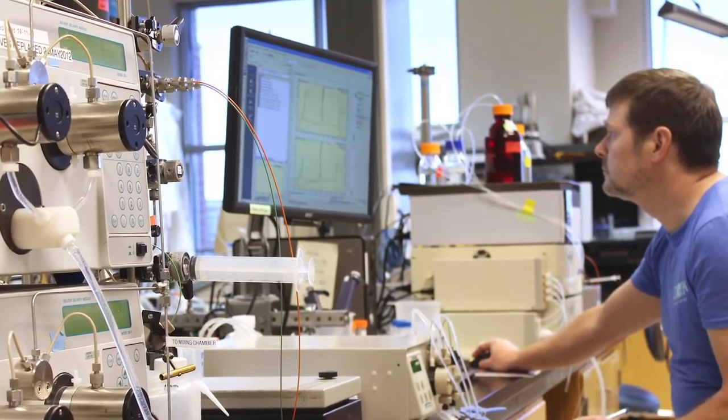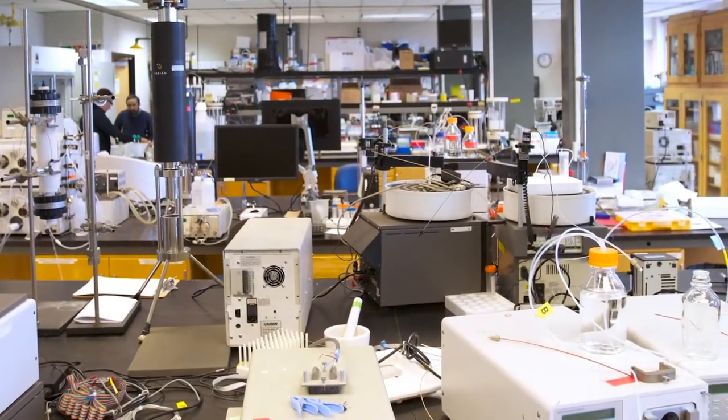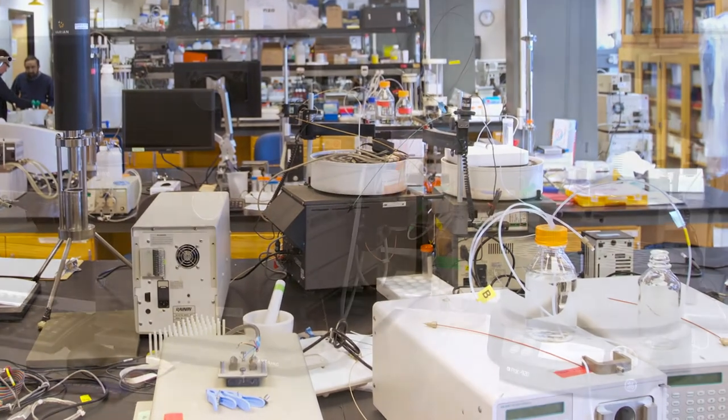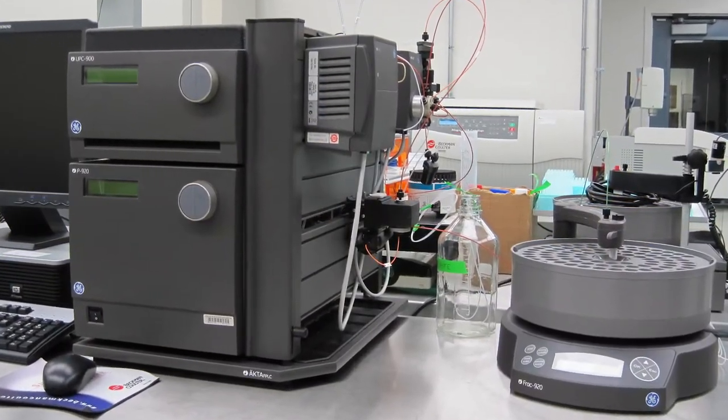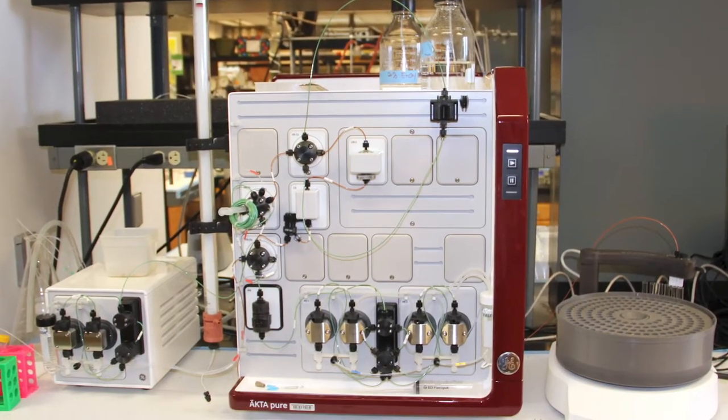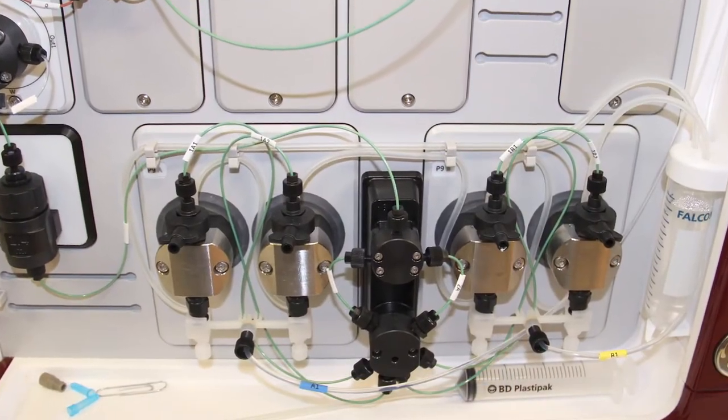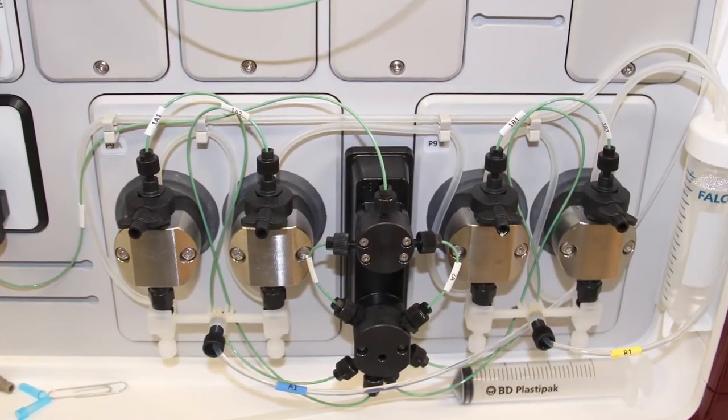For any of the chromatography approaches to work, they require liquid to flow across the surface of the resins. Several different types of equipment can be utilized to achieve flow over resins. These systems have the ability to measure UV absorbance, pH, or conductivity.